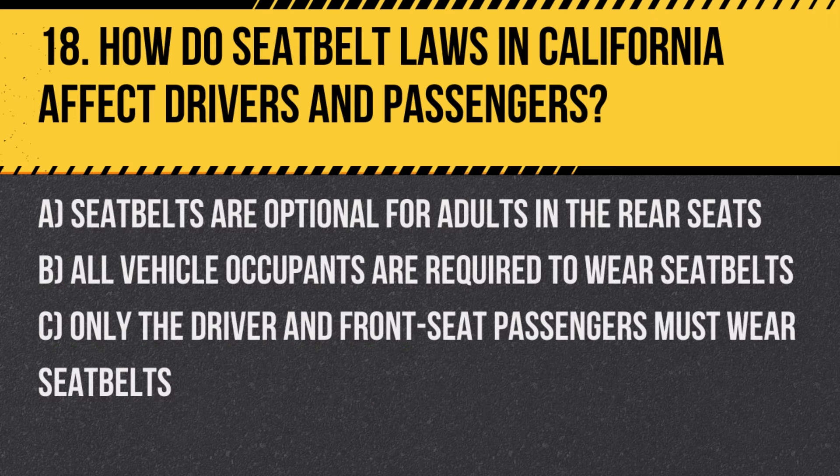Question 18: How do seat belt laws in California affect drivers and passengers? A. Seat belts are optional for adults in the rear seats. B. All vehicle occupants are required to wear seat belts. C. Only the driver and front seat passengers must wear seat belts. Answer: B. All vehicle occupants are required to wear seat belts. This law is enforced to ensure the safety of all occupants in the vehicle.